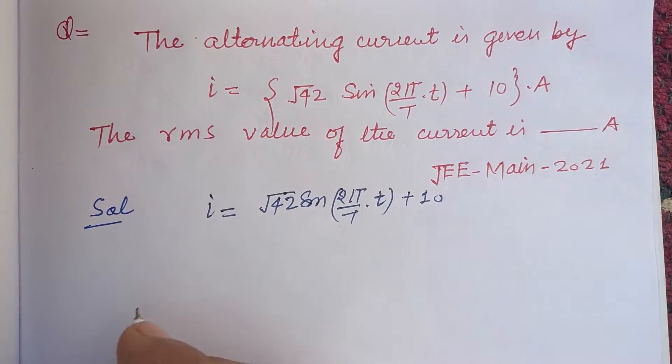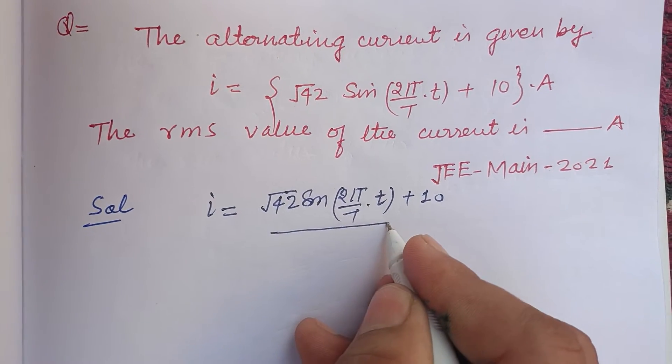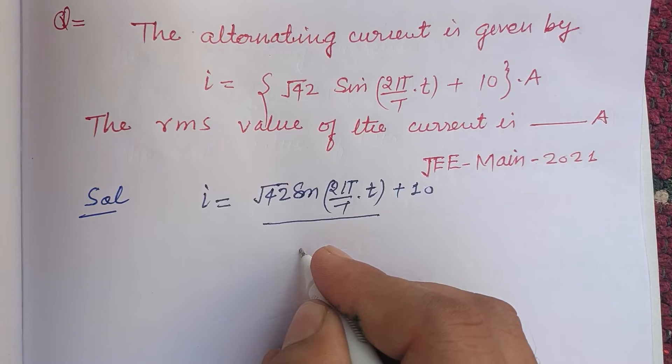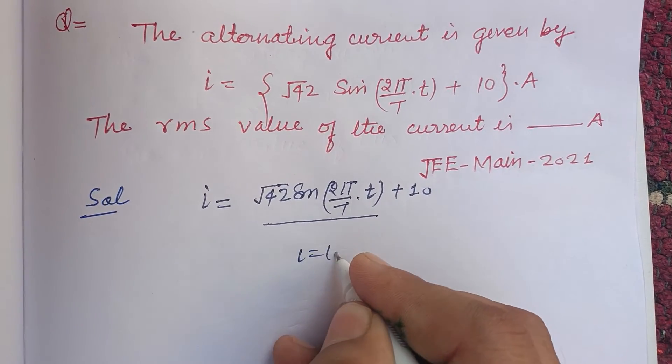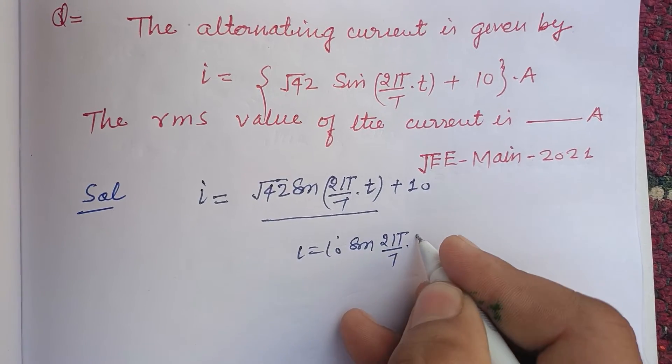So here we need to find the RMS value. i = i₀ sin(2πt/T).